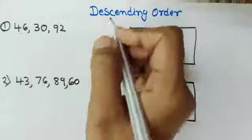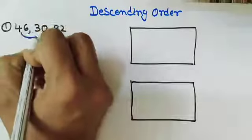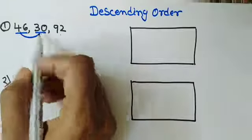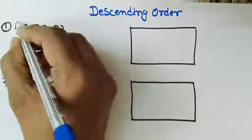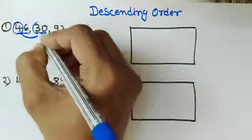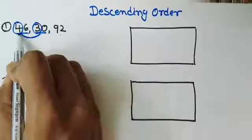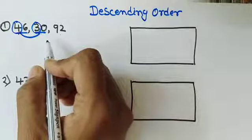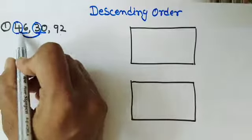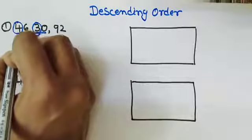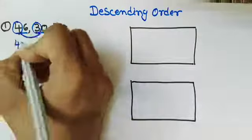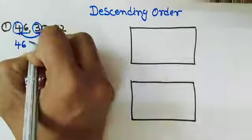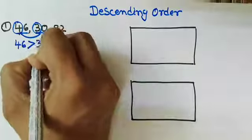For descending order, we need the greatest number. So first, we will compare 46 with 30. Out of these 2 numbers, we have to check the tens place of both numbers. In 46, we have 4 at the tens place, and in 30, we have 3 at the tens place. Out of 4 and 3, 4 is bigger. So for descending order, we write the greater number first — 46 is greater than 30.